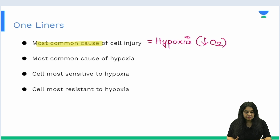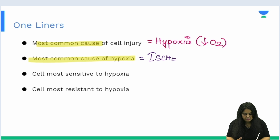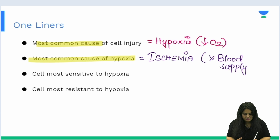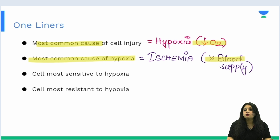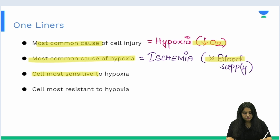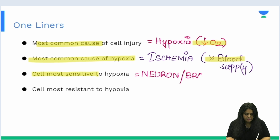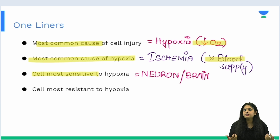Why has the oxygen concentration gone down? The most common cause of hypoxia is ischemia. Ischemia means simply that the blood supply has been cut off. So if we make a flowchart: the blood supply has been cut off, which is the reason the oxygen has gone down. Now, once the oxygen goes down, which cell or organ will give up first? The cell most sensitive to hypoxia will give up in three to five minutes — that cell is the neuron, and that organ is the brain.